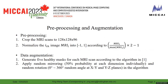There are also two steps in our data augmentation. We firstly generate five healthy MOSCs for each MRI scan according to the algorithm in reference 1. We secondly apply random mirroring with 50% probability at each dimension individually, and random rotation from 0 to 360 degrees at a random angle at the x, y, and z planes in the algorithm.